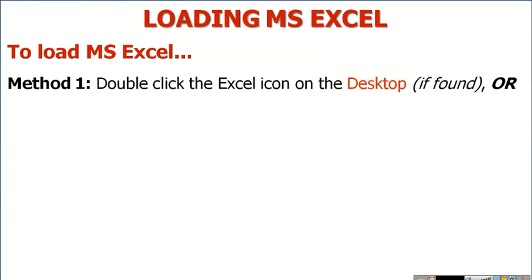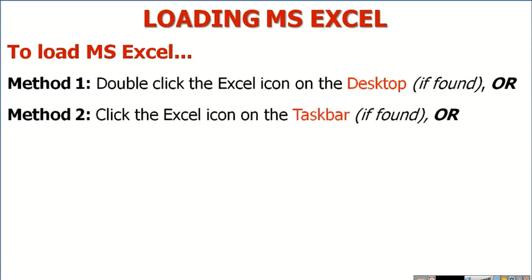Method 1: If the Excel icon is placed on the desktop, you double click on it. Simply double click on the Excel icon if it is found on the desktop. If it is found on the taskbar, you click once. Take note — if it is found on the desktop, you double click; if it is found on the taskbar, you click once.